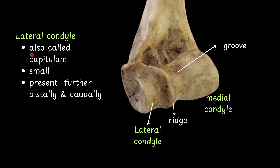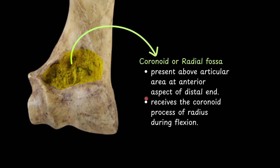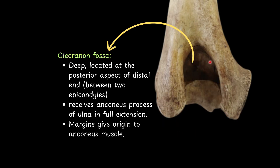The lateral condyle, also called the capitulum, is small and present further distally and caudally. The coronoid or radial fossa is present above the articular area at the anterior aspect of the distal end and receives the coronoid process of the radius during flexion. The olecranon fossa is deep, located at the posterior aspect of the distal end between the two epicondyles.